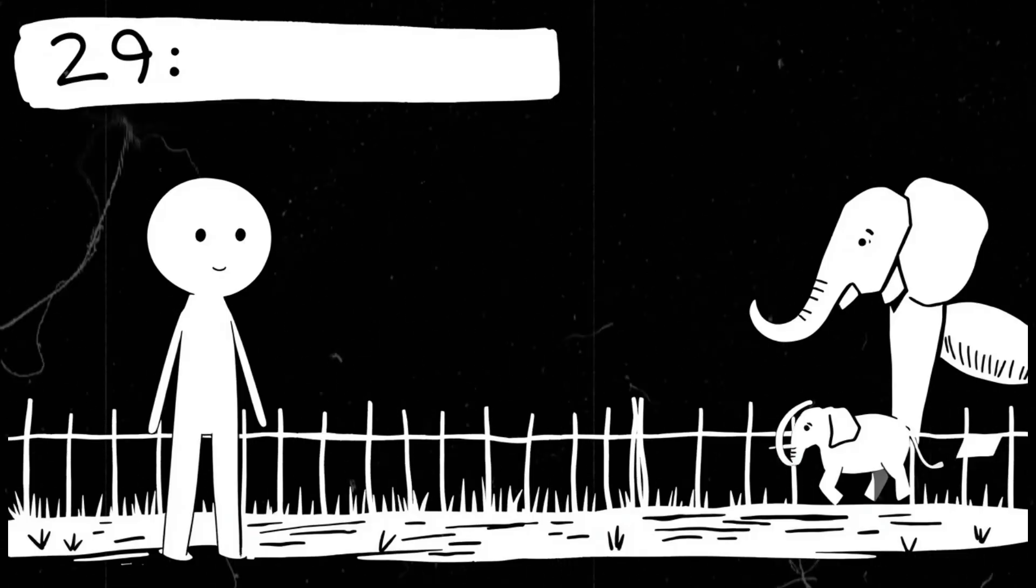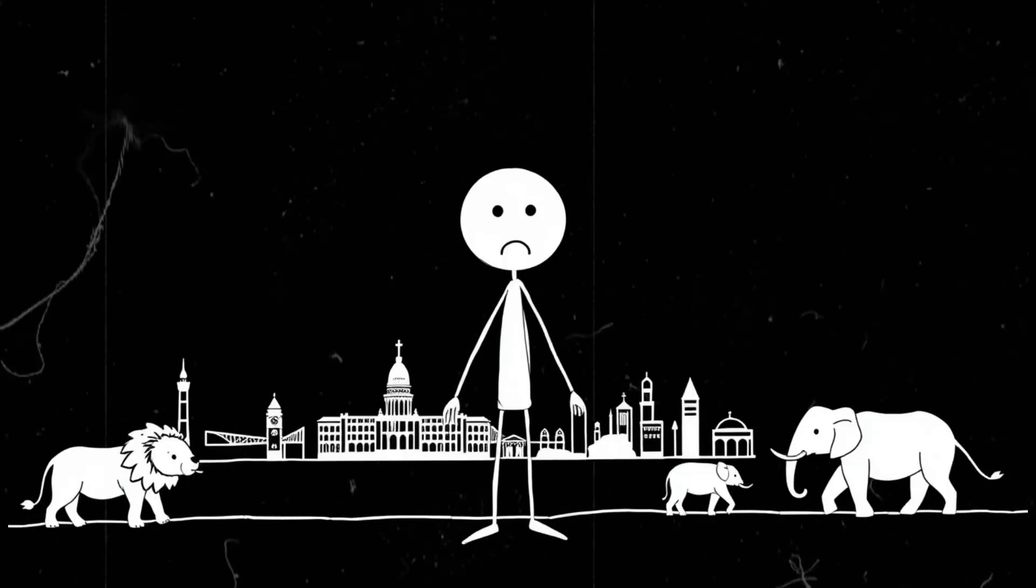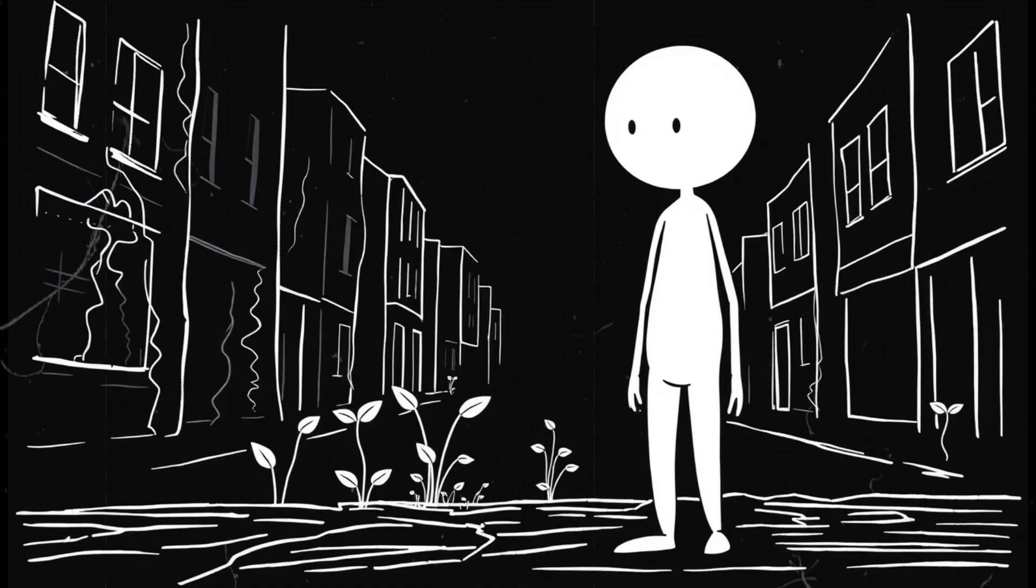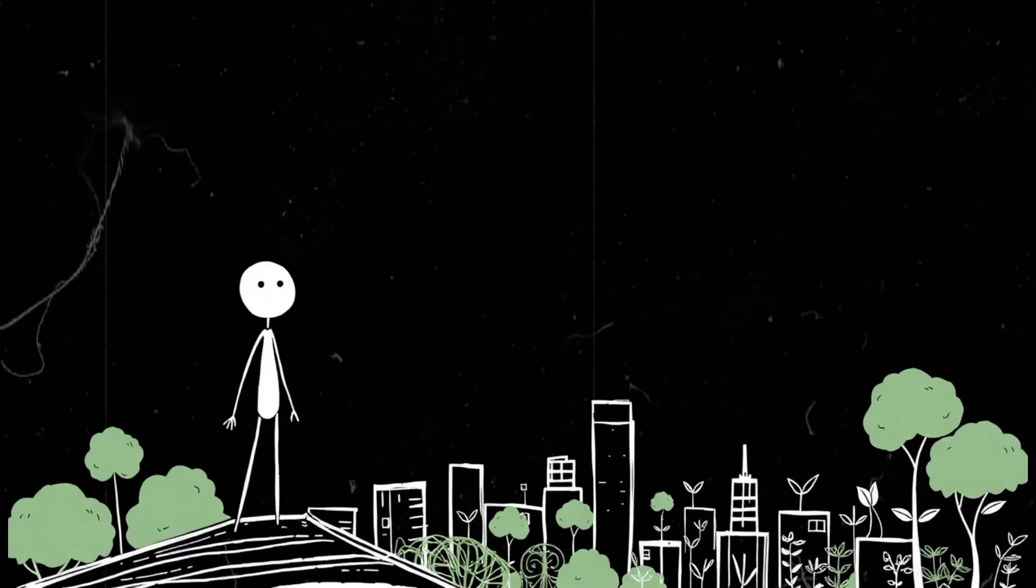Some would break free, turning cities into real-life wildlife parks. Imagine walking through an abandoned London and spotting lions roaming Hyde Park or elephants stomping through Times Square. Nature doesn't just stop at animals. Plants start pushing through sidewalks, climbing over buildings, and slowly dismantling our cities one crack at a time.